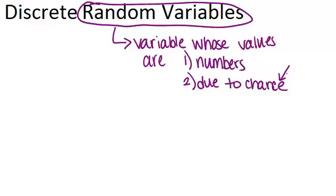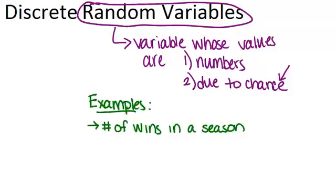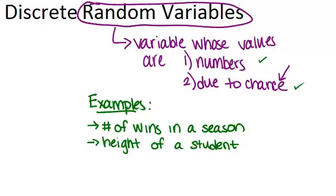Let's think about some examples of random variables. One example would be the number of wins that a baseball team has in a given season. This is a random variable because the number of wins will change from season to season and the number of wins is based on chance. Also, the number of wins will always be a number, so it satisfies both of our two conditions. Another example of a random variable would be the height of a student. This is a random variable because the height of a student will always be a number and the height is sort of random due to chance.